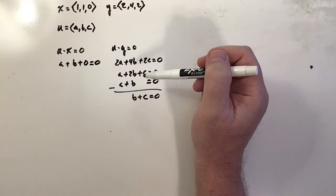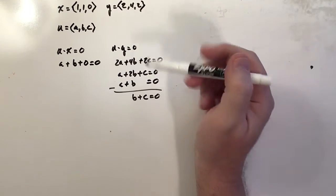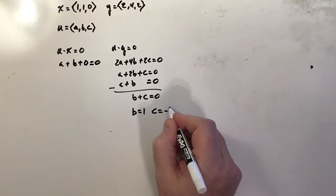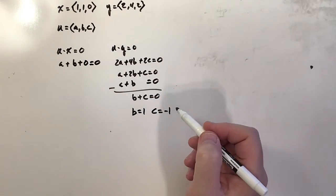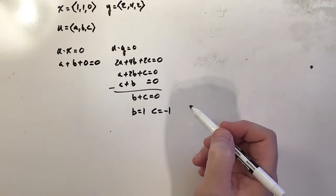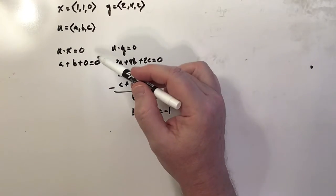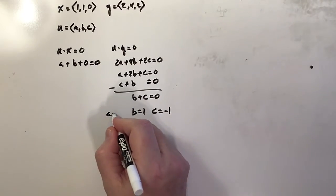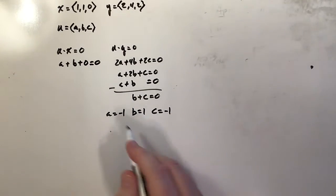So I'm just going to assume that b is equal to 1 and c is equal to negative 1, that way they add to 0. And if b is equal to 1 and c is equal to negative 1, and we look here to the first equation a plus b was equal to 0, that tells me that a also has to be negative 1.